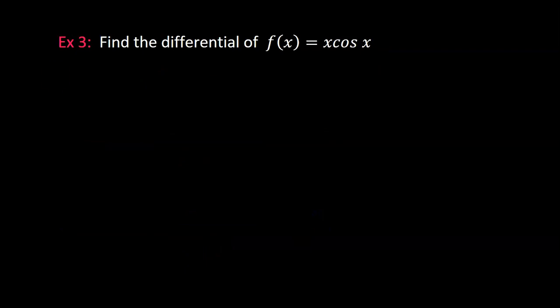Example 3, if I want to find the differential dy for this function, I'm just going to take the derivative and then stick a dx on the end. This is going to be a product rule though, so we are going to first take the derivative of x, and that's going to be 1, and then we multiply that by the other factor, cosine x, and then we put a plus, and now we do it again, but this time we leave the first factor alone, and we multiply it by the derivative of the second factor.